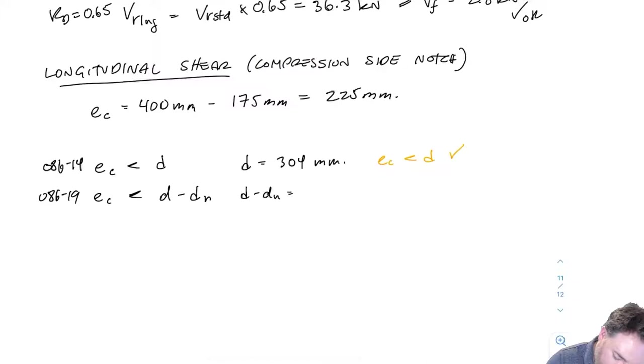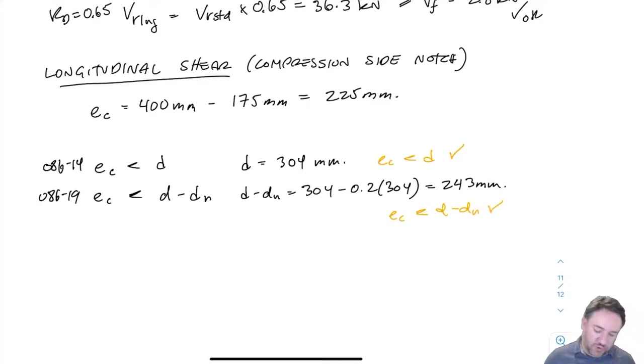And our D minus DN equals 304 minus 0.2 times 304, because our notch depth is 20% of the depth. And we get 243 millimeters, which still satisfies the same condition. So we're going to use the same equation regardless of which code we're going to use. But you can see that if I was kind of in between those two criteria, then I would use a different equation depending on which version of the standard I'm using.